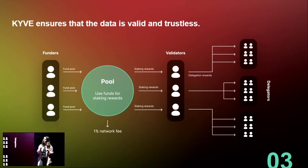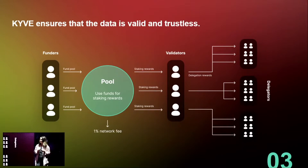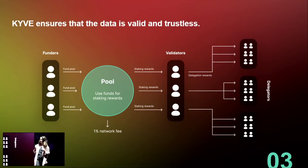A little bit about the different node types. There are two types of nodes. We have the chain nodes, because we are currently a Cosmos-based chain. And we have the protocol nodes, which contain the logic for validating and uploading the data.